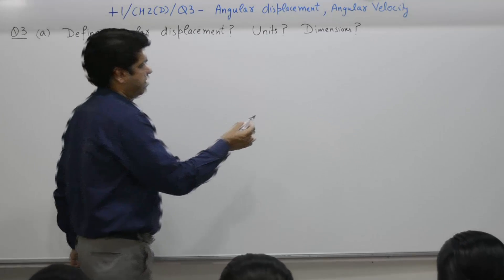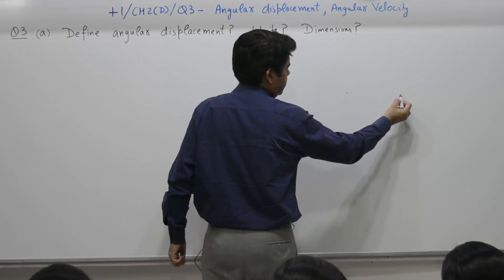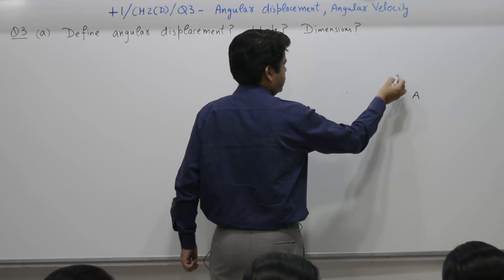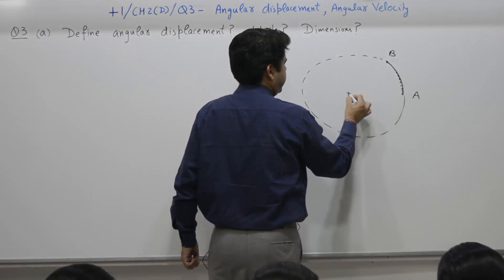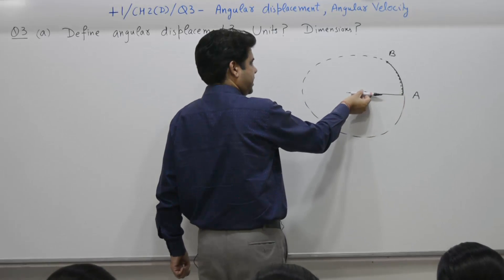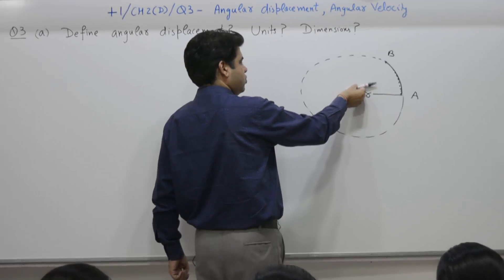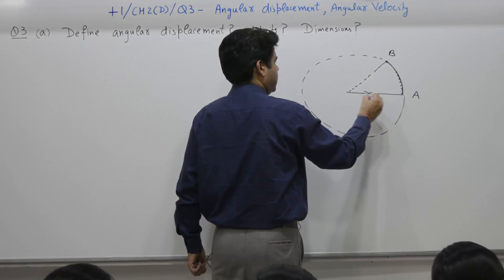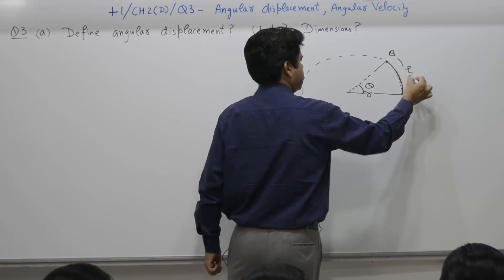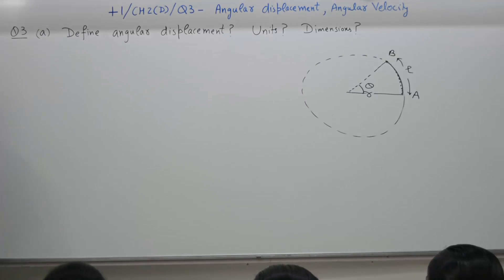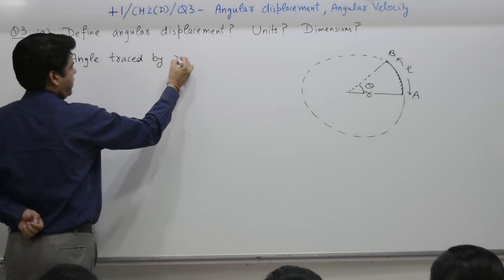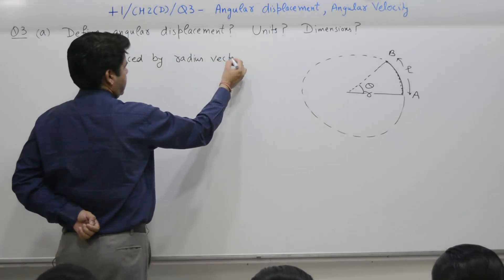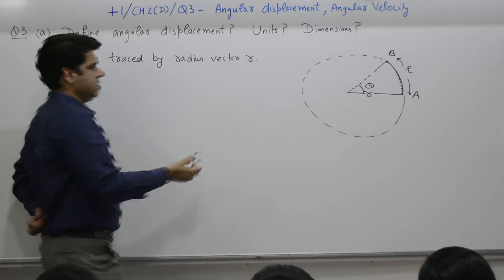Angular displacement is defined as the angle traced by the radius vector R. Consider the center of a circle where the initial position is A and a particle moves to a new position B along a circle of radius R. The radius vector turns from position A to position B, covering angle theta, where the arc length is L. So the arc length L equals R times theta.